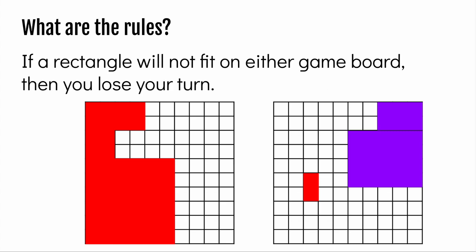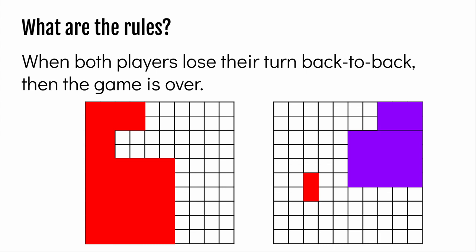If a rectangle will not fit on either game board, then you lose your turn. When both players lose their turn back-to-back, then the game is over. It's possible to lose one turn but then be able to play on the next turn. So keep playing until both players lose their turn in a row.